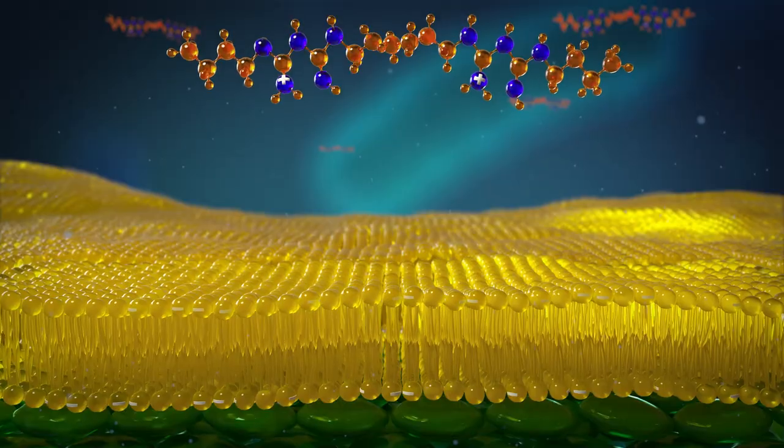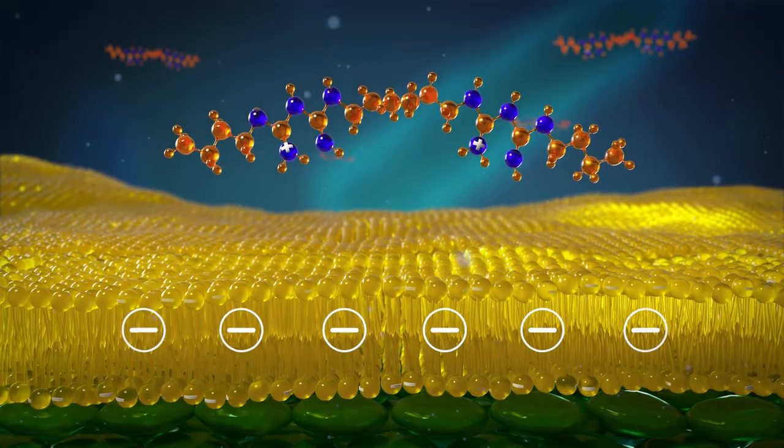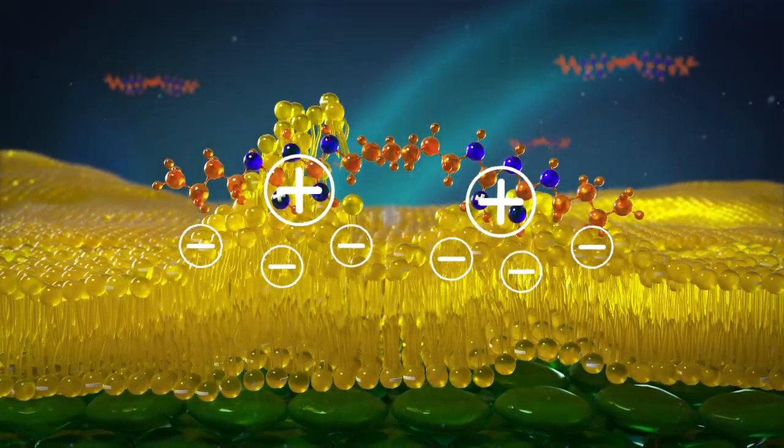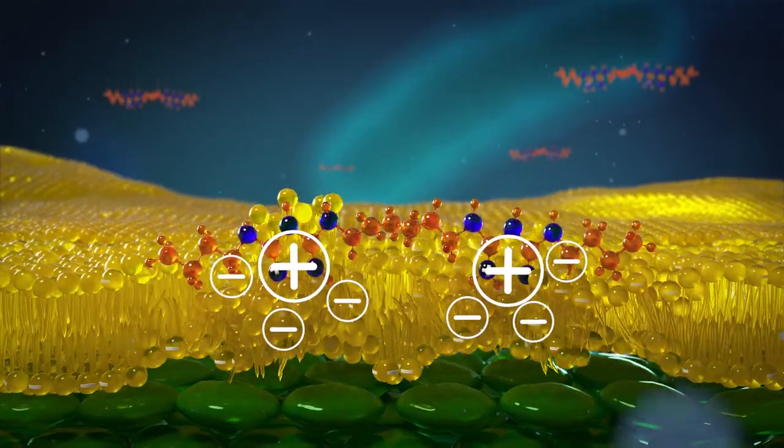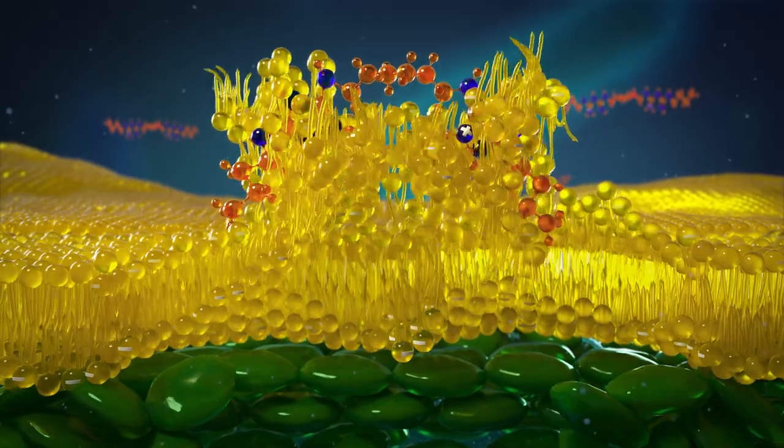A bacterial cell wall has a negative charge, while the PHMB molecule has several positive charges, which makes PHMB act like a magnet, attaching itself to different areas of the cell, starting with the negatively charged outer cell wall.